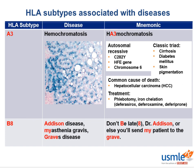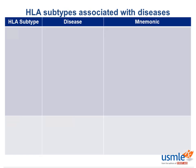Graves' disease is the most common cause of hyperthyroidism and Myasthenia Gravis is the most common neuromuscular junction disorder. Addison's disease involves adrenal insufficiency, with symptoms including weakness, fatigue, and orthostatic hypotension. It is the chronic form of primary adrenal insufficiency due to adrenal atrophy or destruction by disease.